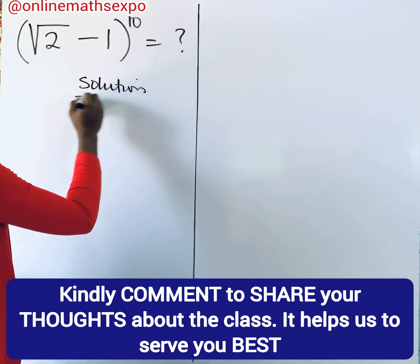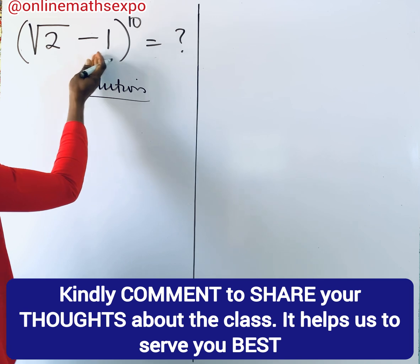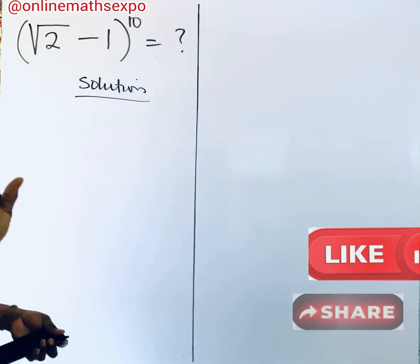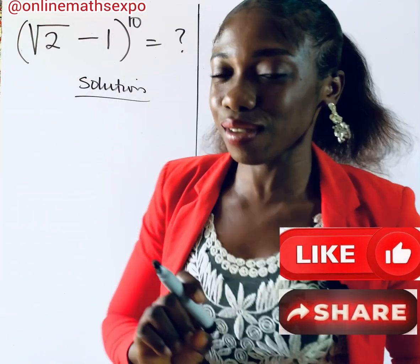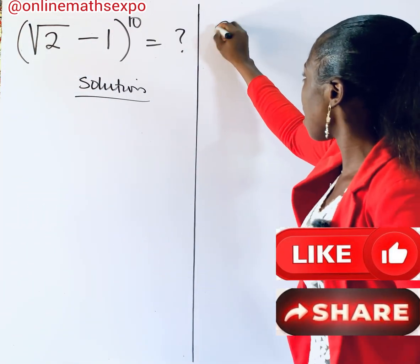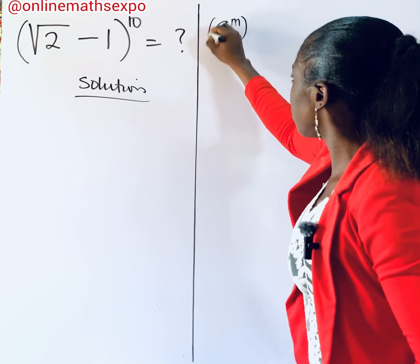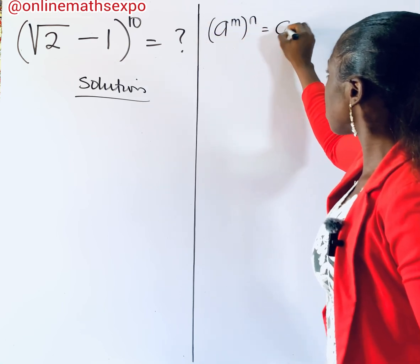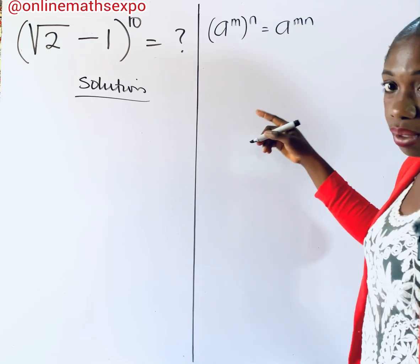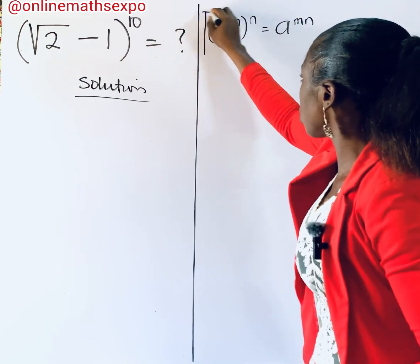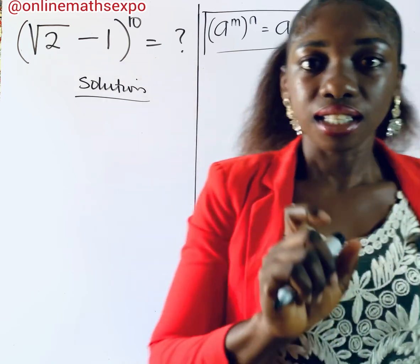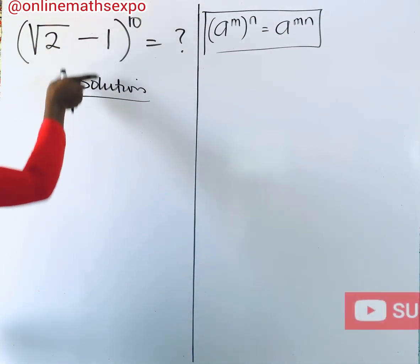This is what we are given, and it's all raised to the power of 10. We're going to remind ourselves of the exponential rule that says a raised to power m, raised to the power of n, is a raised to power m×n. The powers always multiply, and this rule is going to guide us in simplifying this expression.